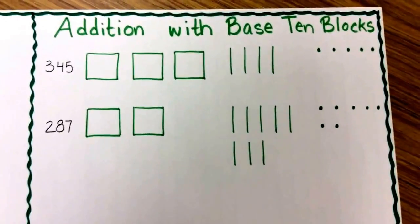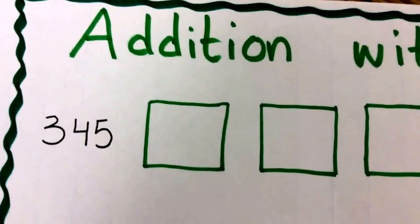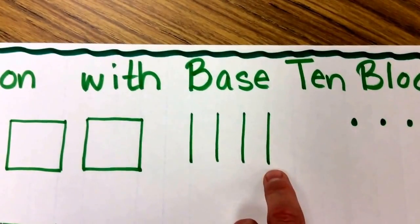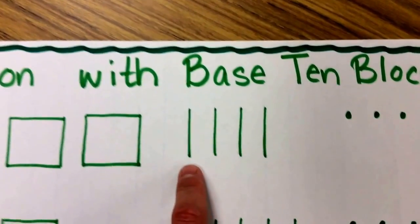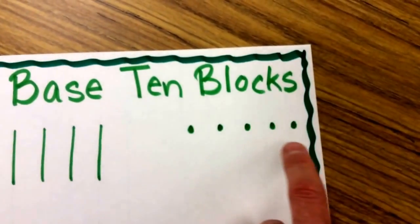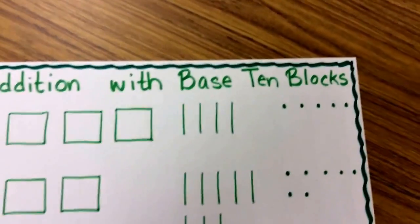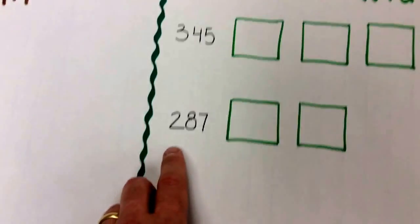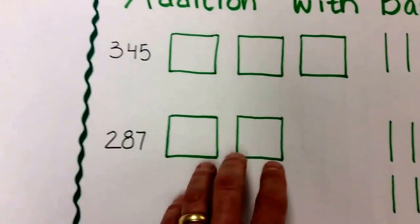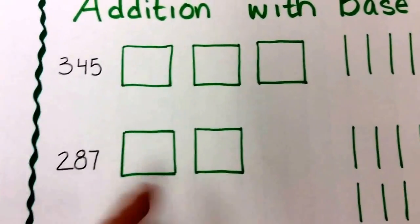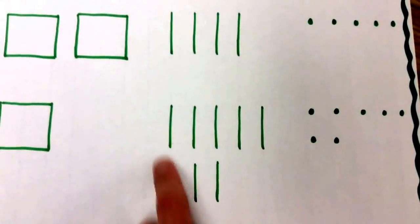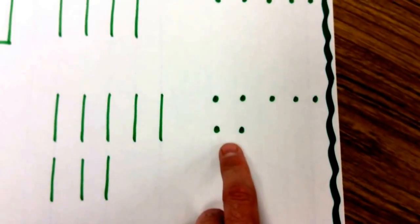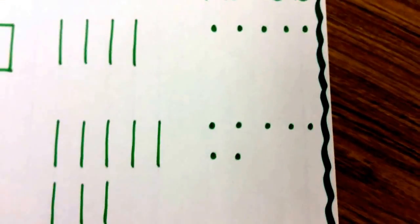When I draw it, it will look something like this. Here's my 345. I have three hundreds flats, four little lines representing the ten rods, and five little dots representing the ones. That would be 345. Down here representing the 287, I have two boxes representing the hundreds flats and eight tens rods representing the 80, and right here I have seven little dots representing seven ones.